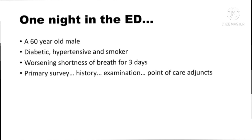You are in the emergency department one fine night when you see a 60-year-old male patient who is diabetic, hypertensive, and a smoker. He has presented with worsening shortness of breath for the last three days. You've got a great team of healthcare professionals. You do the primary survey, take the history, perform the examination, and use point-of-care adjuncts to reach a diagnosis.